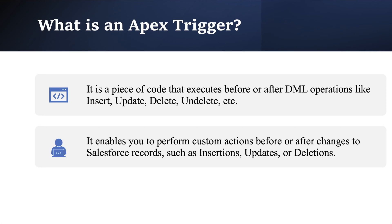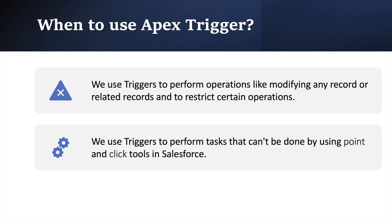Now we know what a trigger is, but when should we use it? We use triggers to perform operations based on specific conditions — for example, if we want to restrict certain operations under specific conditions, or if we want to modify a related record which we cannot do with point-and-click tools. The thumb rule is: if a requirement is possible with a point-and-click tool, go with it. If not, then do it with an Apex Trigger.